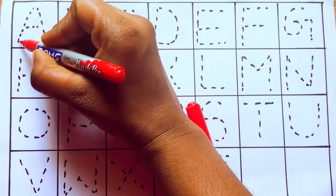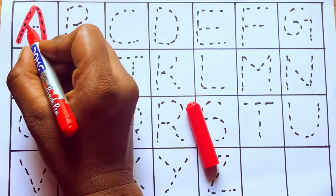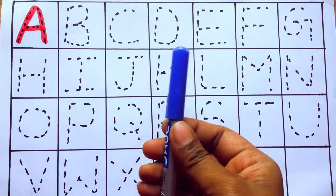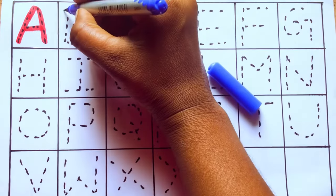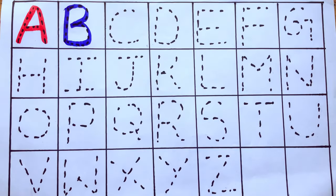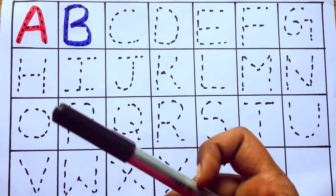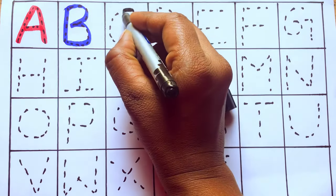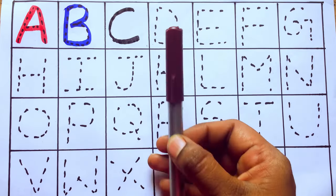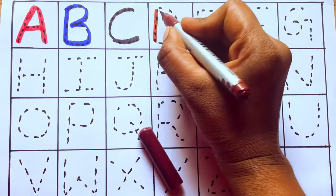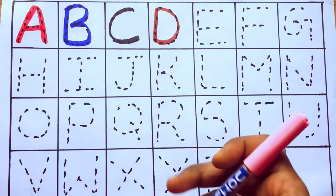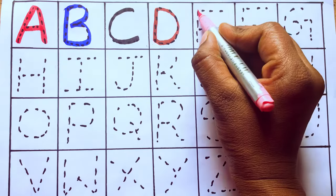Yay! A for apple, blue color. B for ball, black color. C for cat, brown color. D for dog, light pink color. E for egg.